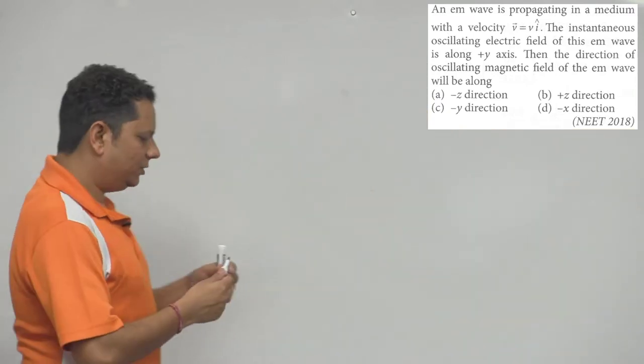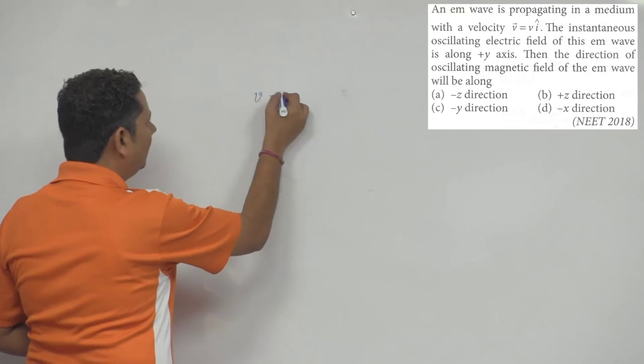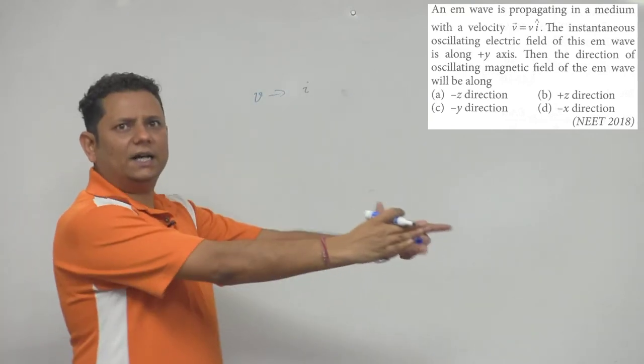So in this case, what we're given is velocity, which is in i cap. So velocity is in this direction.